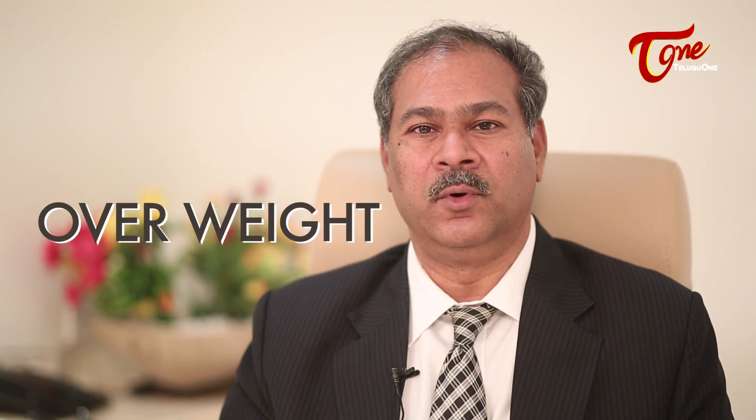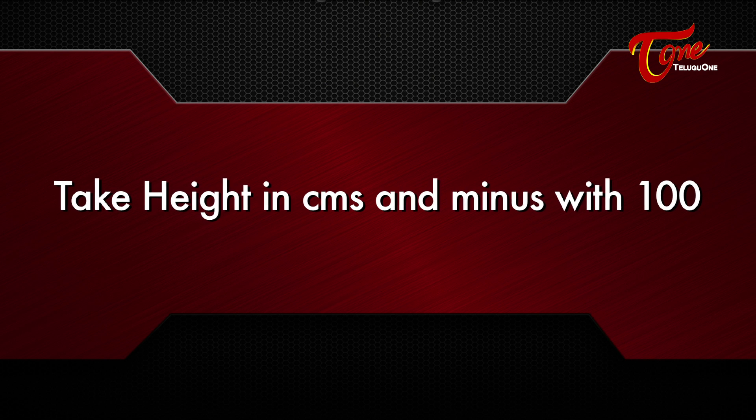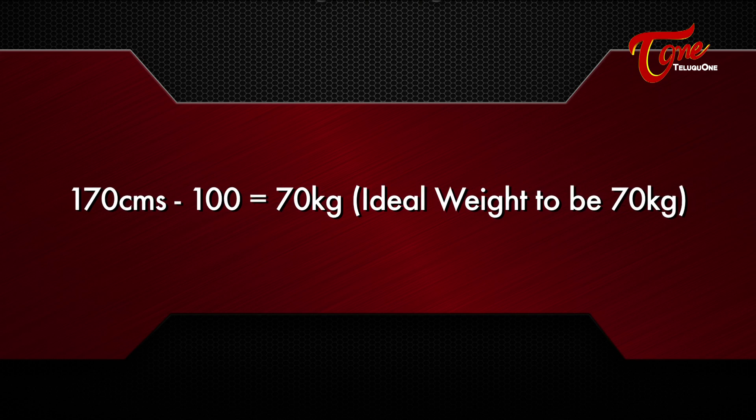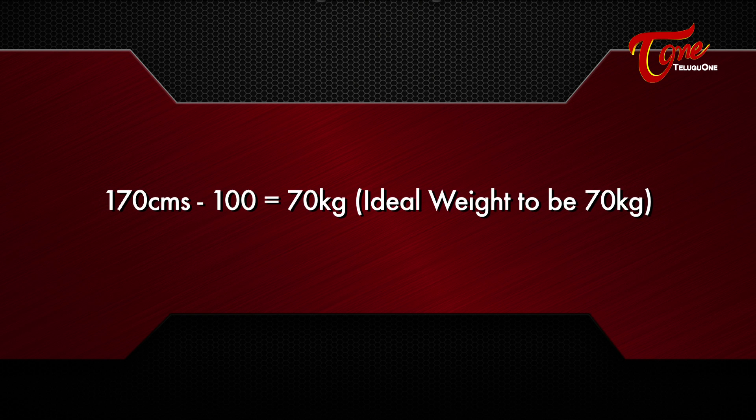Everybody now talks about obesity, overweight and body mass index. So we need to know what exactly is the body mass index. The simplest way of calculating ideal weight is to take the height in centimeters and minus 100. For example, if somebody is 170 centimeters in height, the ideal weight will be 70 kilograms because 100 has to be taken away.